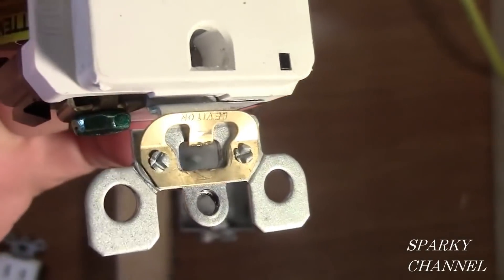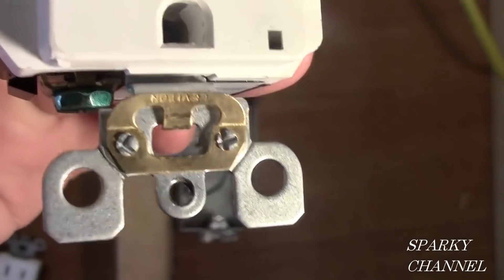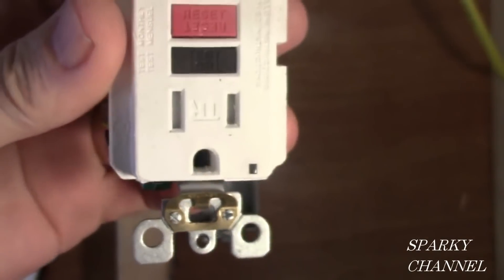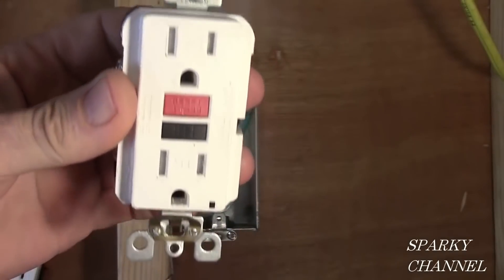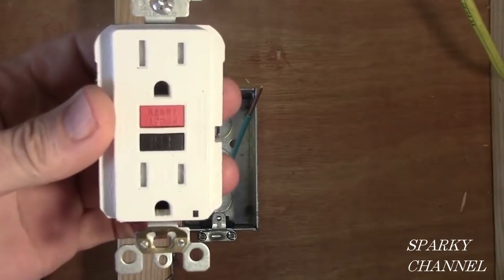The answer is this gold clip is called a self-grounding clip, and they come on many of the newer Leviton devices. This happens to be a ground fault circuit interrupter.